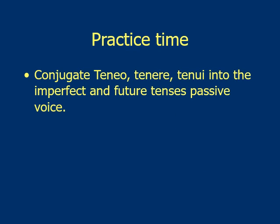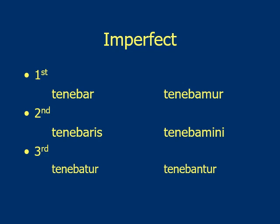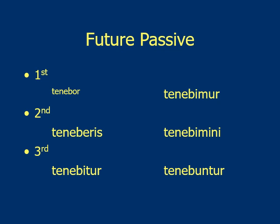Here's a quick example using a second conjugation verb. We're going to form it into the imperfect and future tenses. Go to the second principal part, drop off the -re — there's the stem. For the imperfect: stem plus -ba- plus passive endings, giving tenebar, tenebaris, tenebatur, tenebamur, tenebamini, tenebantur. For the future: the first person is -bor, so tenbor; the second person singular is -beris — teneberis; then tenbitur, tenebimur, tenebimini, tenebuntur.